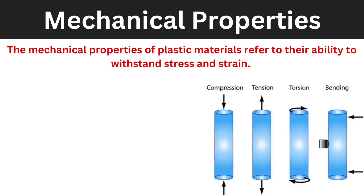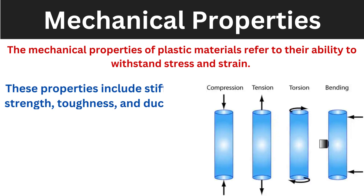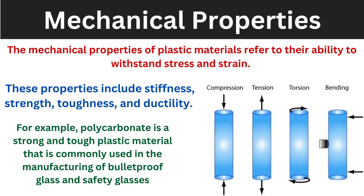The mechanical property of a plastic material refers to its ability to withstand stress and strain — checking whether the component will withstand stresses and forces or not. This property includes stiffness, strength, toughness, ductility, and many others. For example, polycarbonate is a strong and tough plastic material that is commonly used in the manufacturing of bulletproof glass and safety glasses.